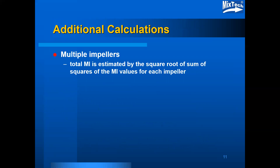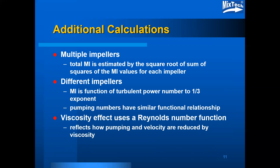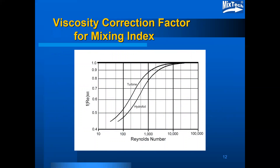For multiple impellers, the total mixing index can be estimated by the square root of the sum of squares of the mixing index values for each impeller. For different impellers, the mixing index is a function of the turbulent power number to the one-third, and that one-third power exponent is also characteristic of pumping numbers with similar functional relationships. The viscosity effect uses a Reynolds number function to correct for the reduced pumping curve velocity with increased viscosity.